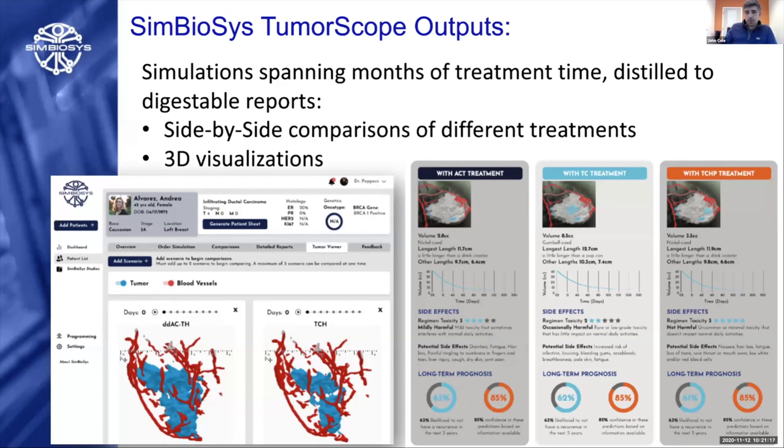Through a standard iterative time-stepping scheme, we run simulations for weeks or months of treatment time and compile them into easily digestible reports. These include side-by-side comparisons of different possible treatments and 3D visualizations that can be scrubbed in time and rotated, so physicians and patients can get a better sense of how different treatment possibilities will affect their tumor.